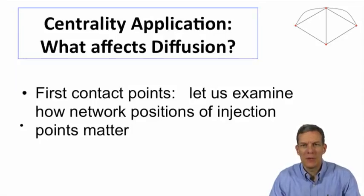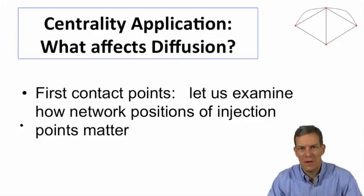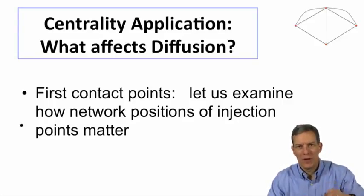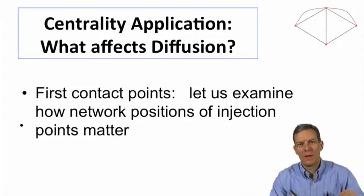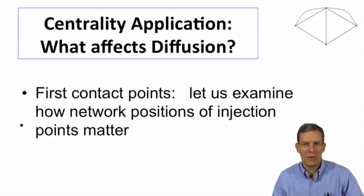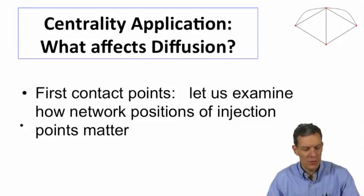The question we're going to be looking at is diffusion, and we're going to be looking at the first contact points in a process. A diffusion process was started, and we have some idea of which points in the network were first contacted. We see what the diffusion looks like across a bunch of different networks, and we can try to compare and say how the centrality of the nodes predicts how successful the eventual diffusion would be.